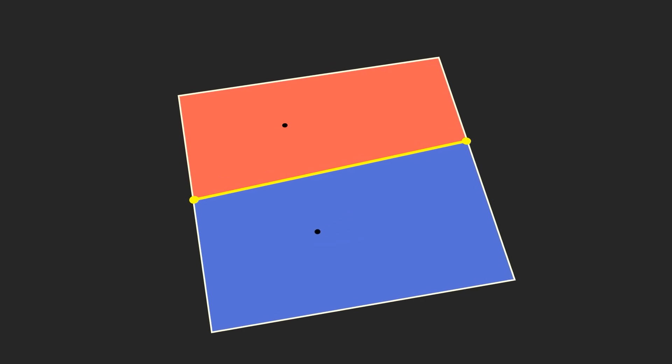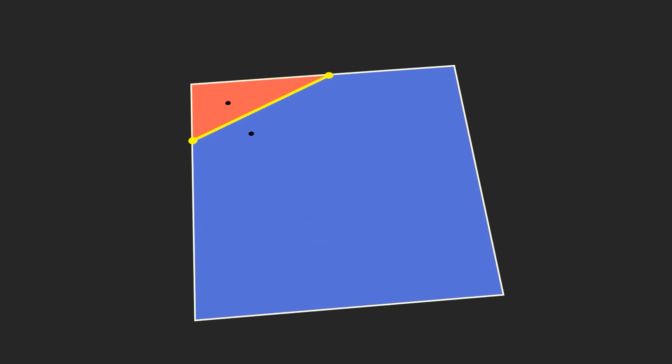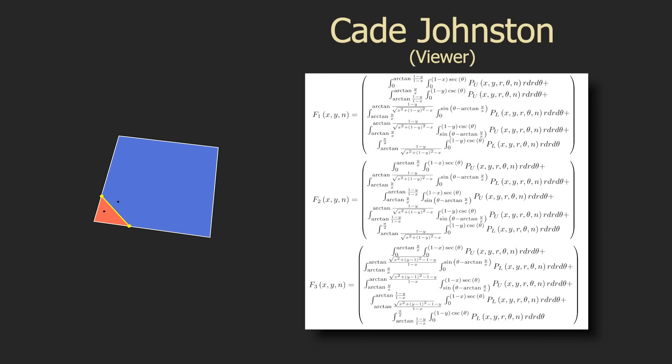This arises in part because with all the different configurations of how the two sites could look, the perpendicular bisector sometimes spans all the way across the square from one edge to the opposite one, but sometimes only spans from one edge to an adjacent one across the corner.